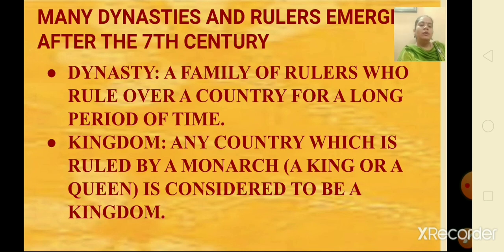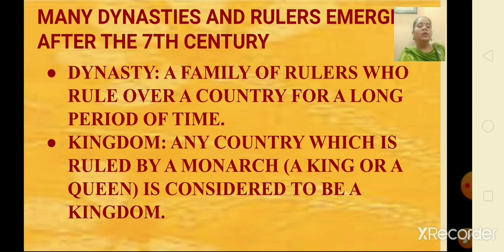Now that we have come across the term dynasty, let us understand what it means. A dynasty is a family of rulers who rule over a country for a long period of time. A kingdom is any country which is ruled by a monarch — that is a king or a queen. The existing kings recognized the samantas as their subordinates.